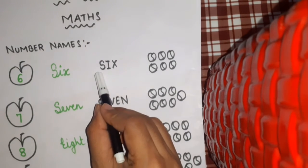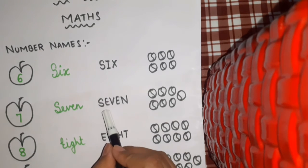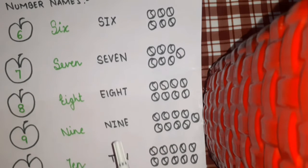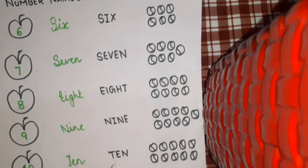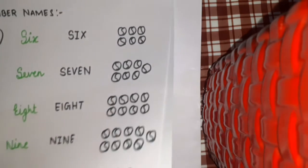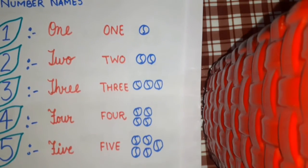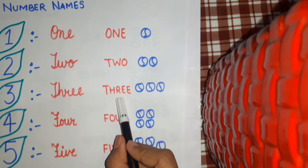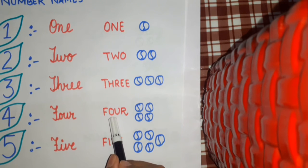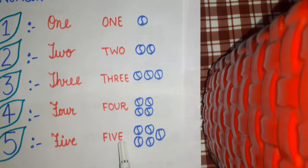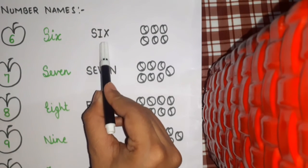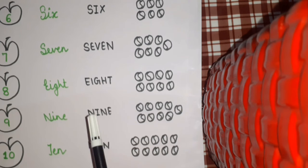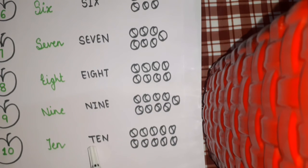Repeat again. 1: O-N-E, 1. 2: T-W-O, 2. 3: T-H-R-E-E, 3. 4: F-O-U-R, 4. 5: F-I-V-E, 5. 6: S-I-X, 6. 7: S-E-V-E-N, 7. 8: E-I-G-H-T, 8. 9: N-I-N-E, 9. 10: T-E-N, 10.